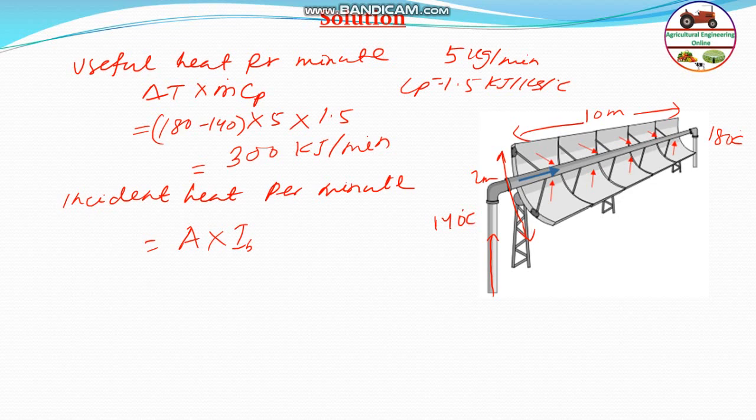Here the incident beam radiation is given that is 3000 kilojoule per hour per meter square. Therefore, area is 2 into 10. Therefore, putting this the incident heat will be equal to 2 into 10 into 3000, since it is given in hour, to make it minute divide by 60. So you can get the incident heat will be equal to 1000 kilojoule per minute.